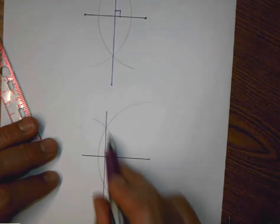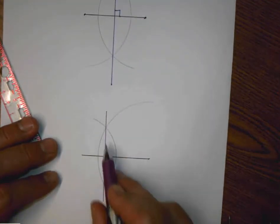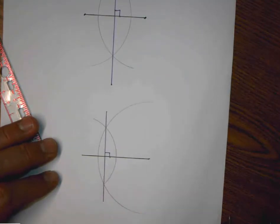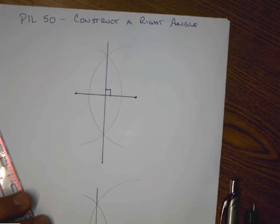But if I choose my circles to have different radii, then it will still be perpendicular, thus earning me the right angle, but it will no longer be a bisector. That concludes PIL 50, constructed right angle.